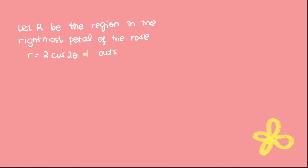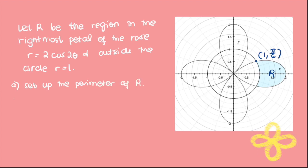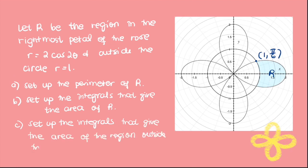Now, let R be the region in the rightmost petal of the rose with equation r equals 2 cosine 2 theta and outside the circle r equals 1. This is our region R, and we are given the point of intersection (1, pi over 6). We are asked to set up the integrals for the perimeter of R, the area of R, and the area of the region outside the circle but inside the rose.